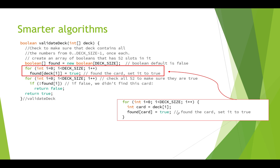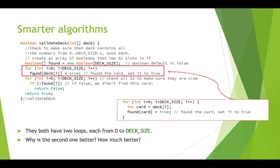Both loops go from zero to deck size, but this version is a lot better. Why is it better, and how much better is it? Let's actually go and run these two algorithms. Here's shuffle test — the first one — and here's shuffle test fast — the second one.